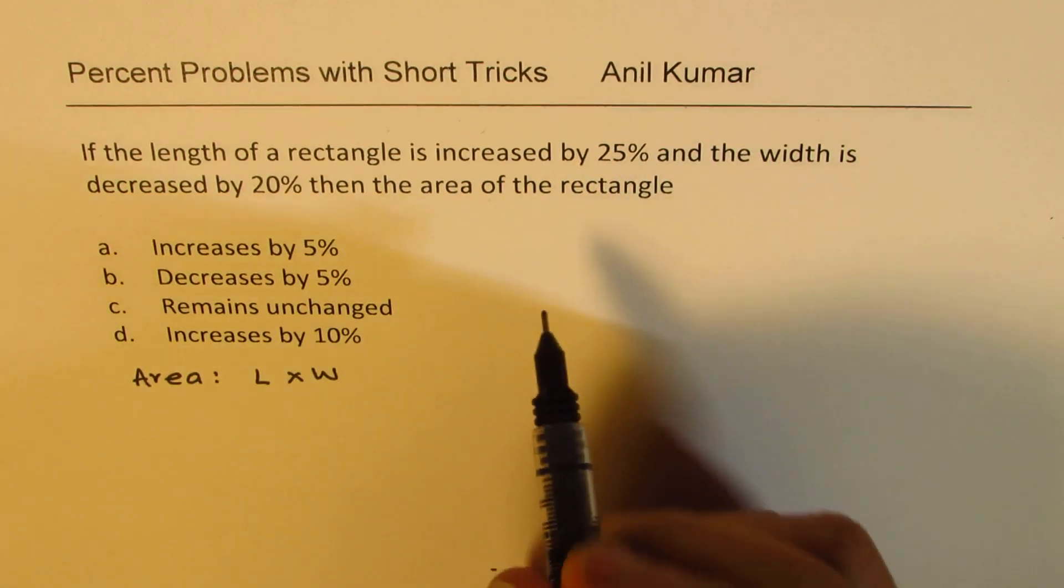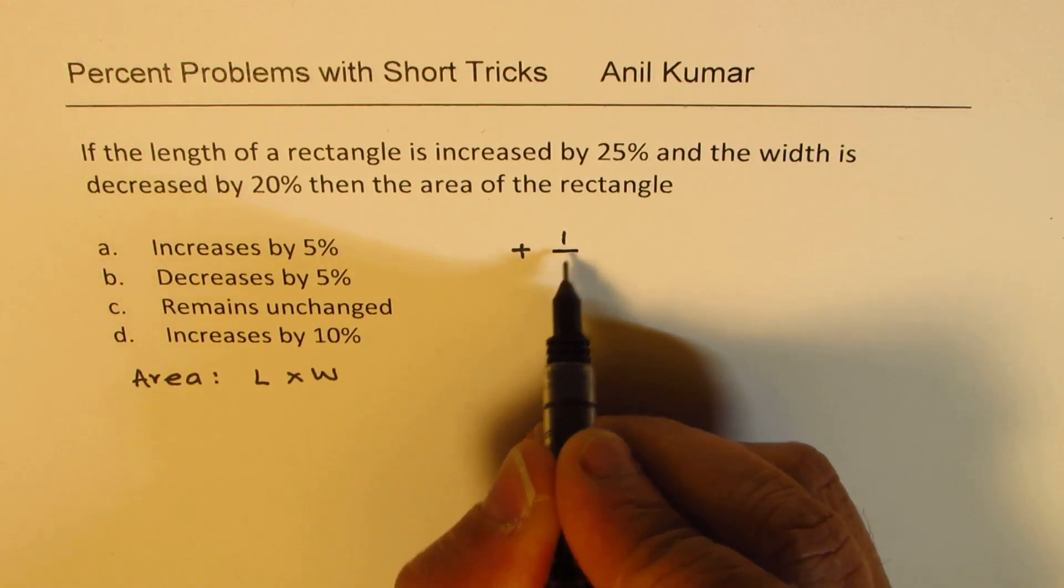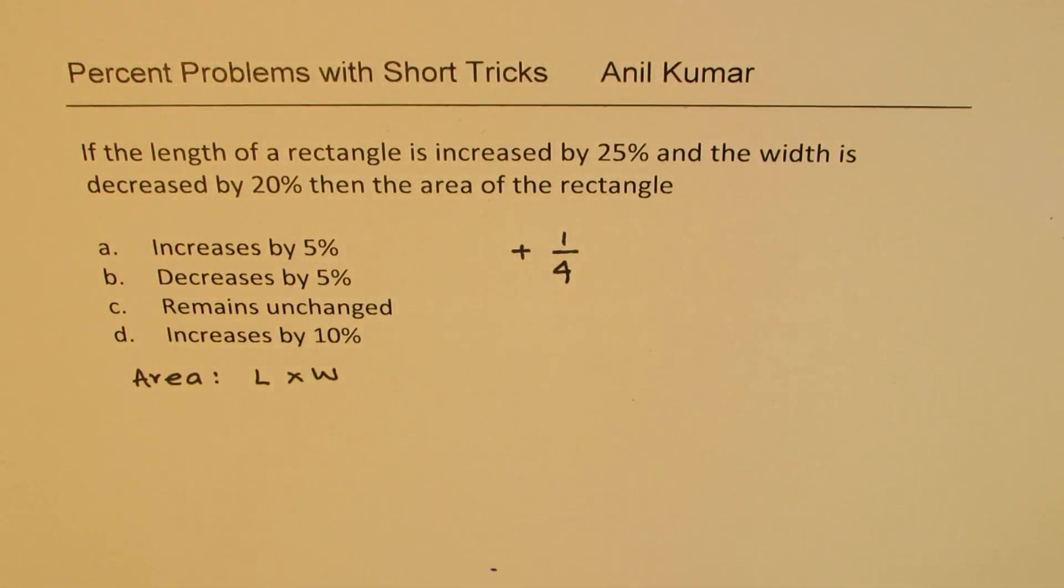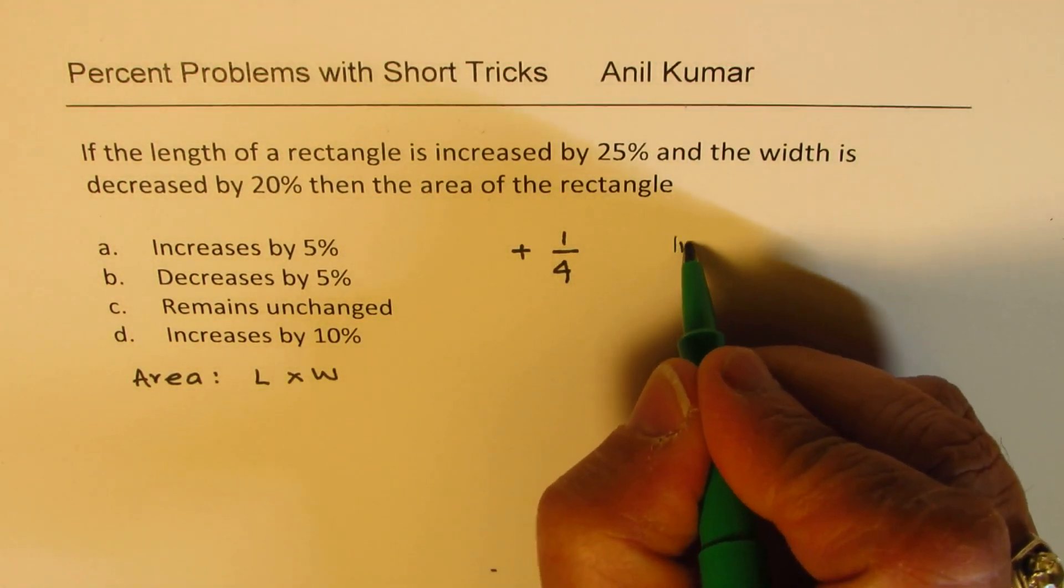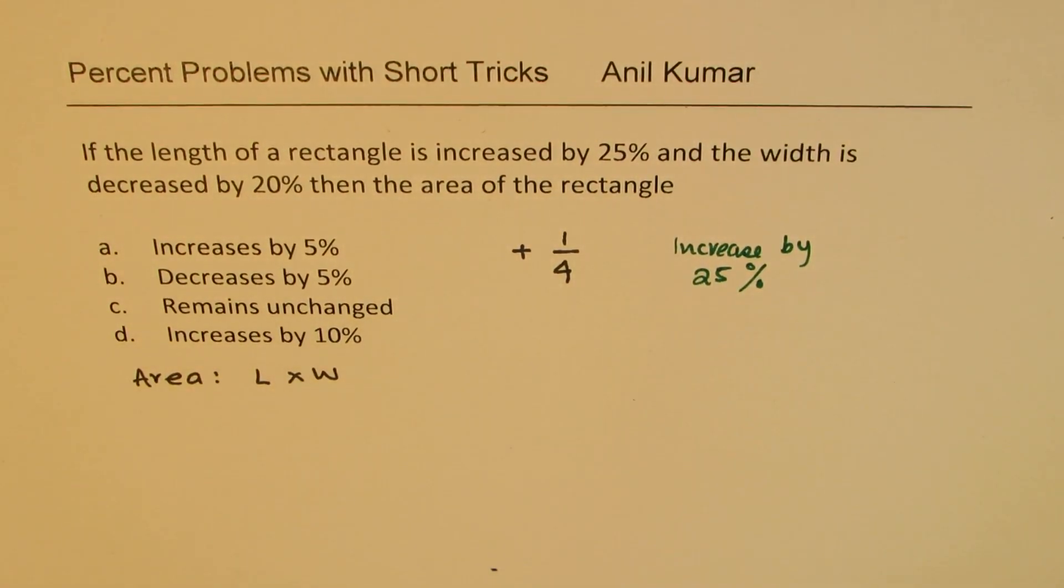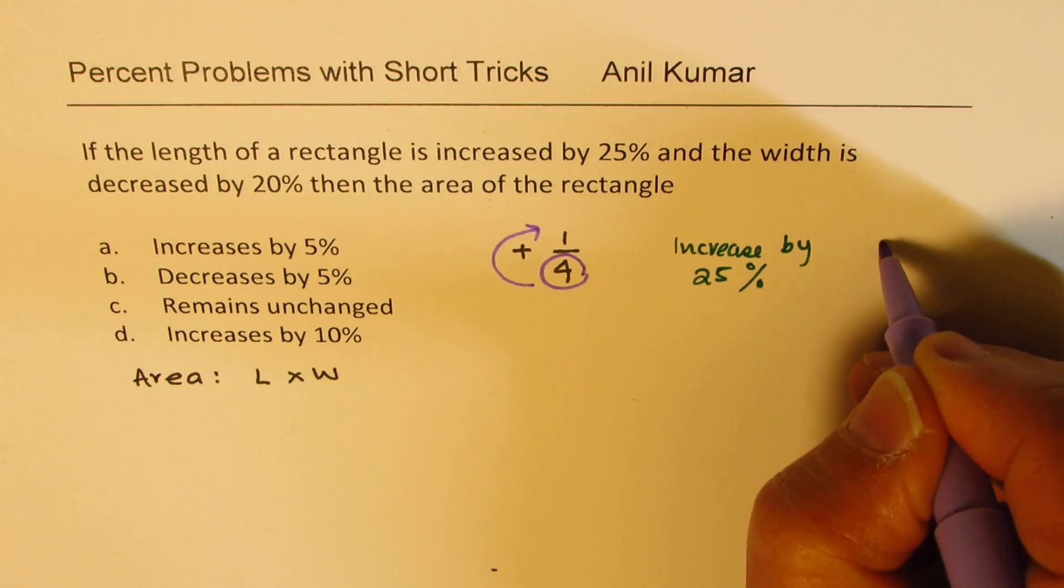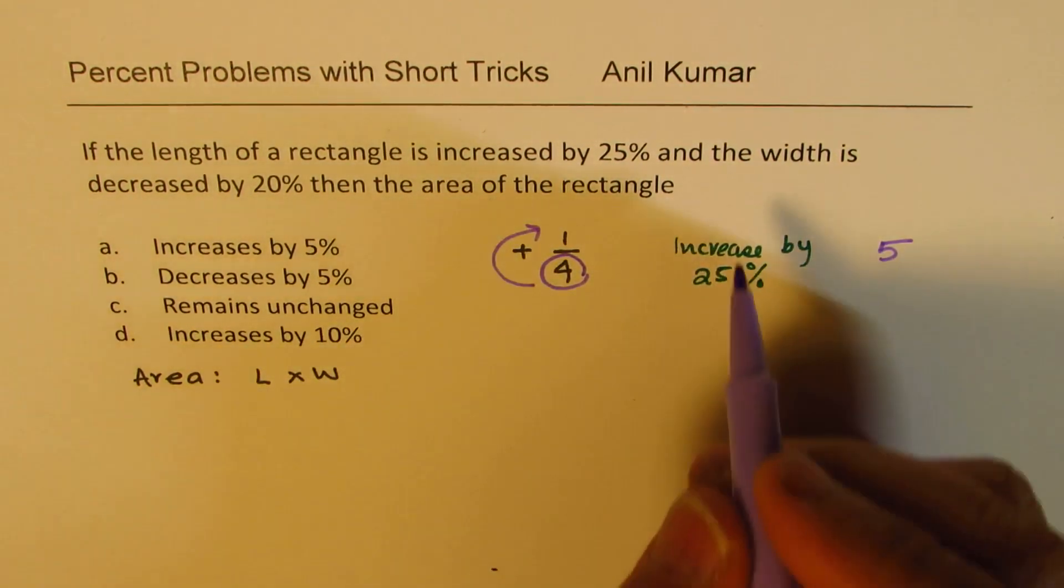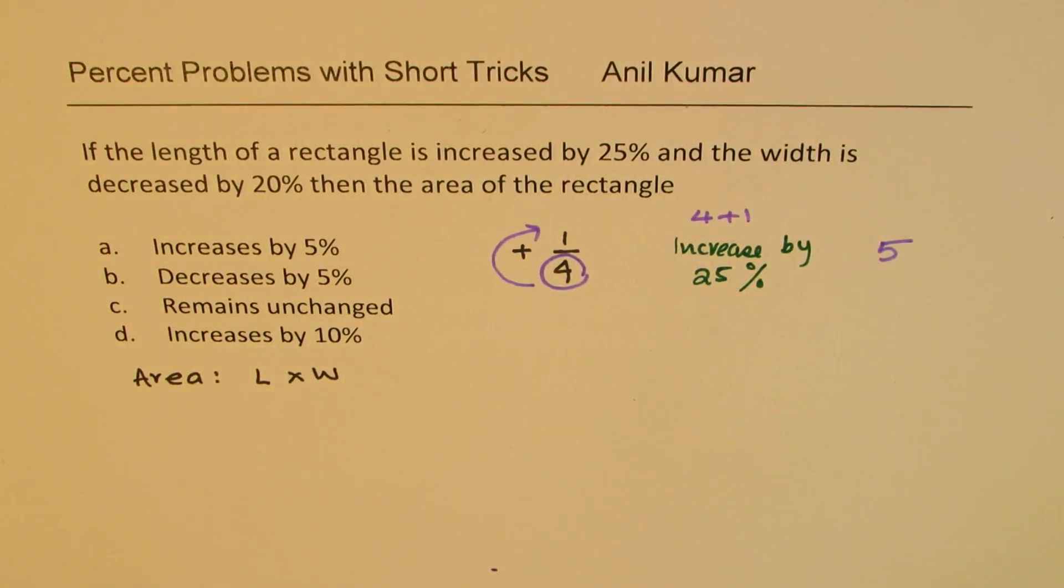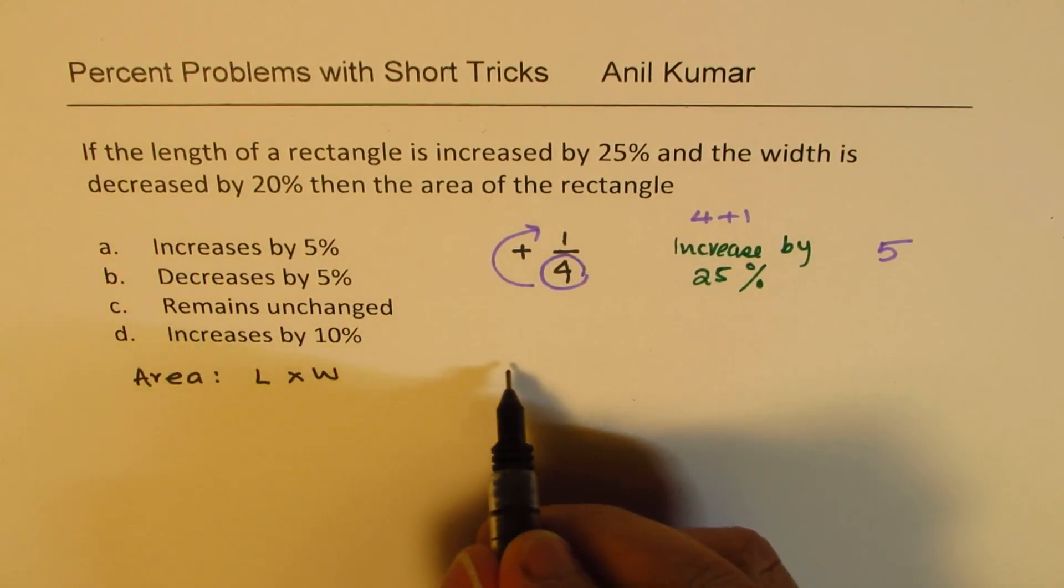When we say area, we mean length into width. Two dimensions are being multiplied. Length of the rectangle is increased by 25%, that means 25% is 1 out of 4, plus means increase. So 1 out of 4, when you increase it by 25%, the dimension which was 4 changes to 5.